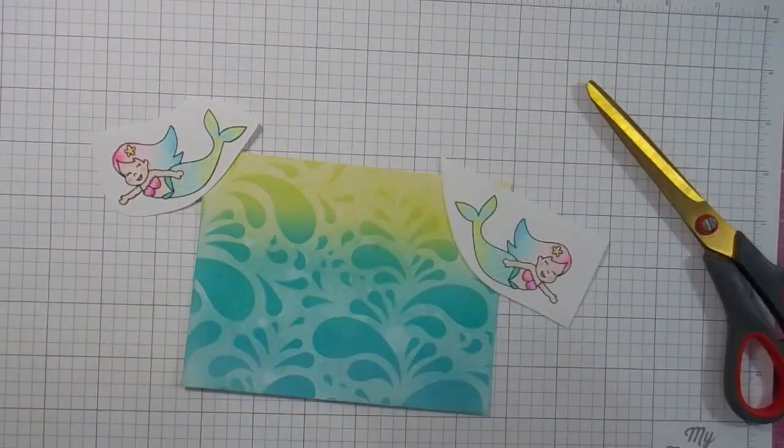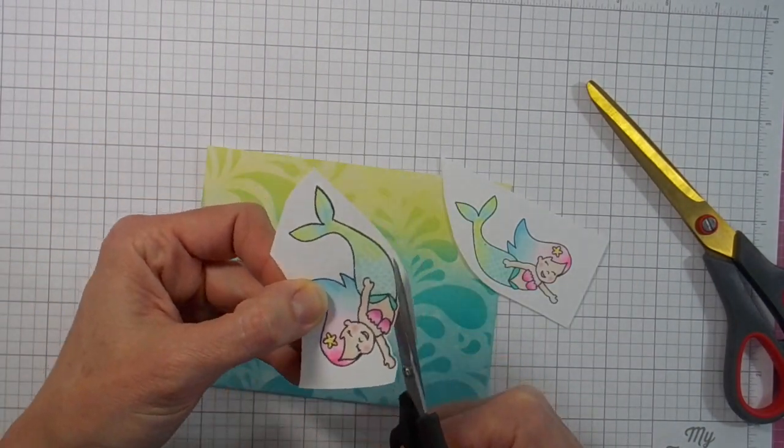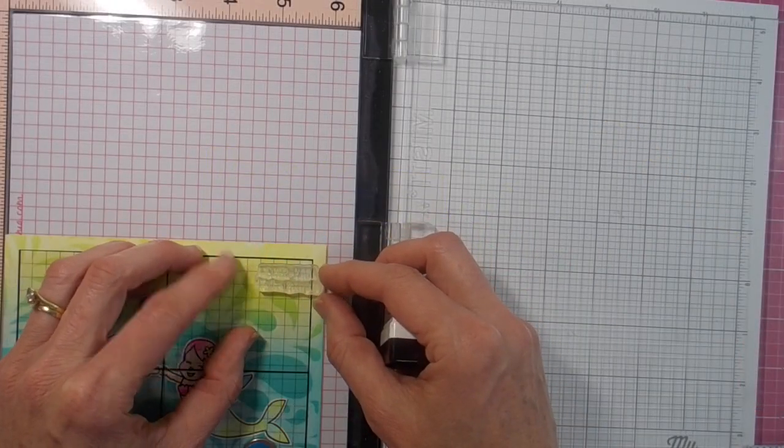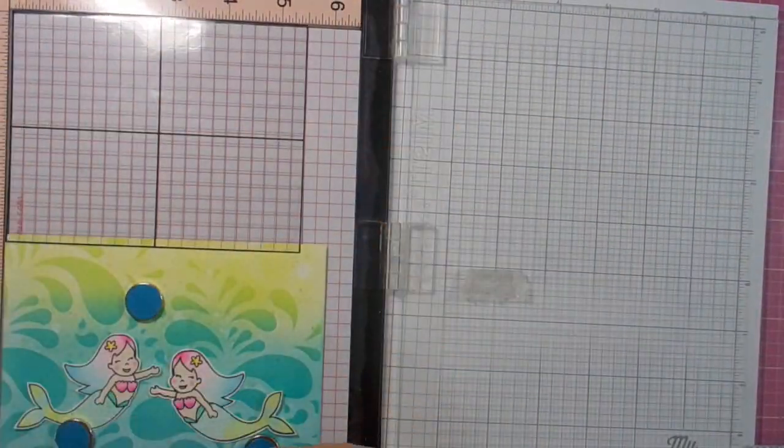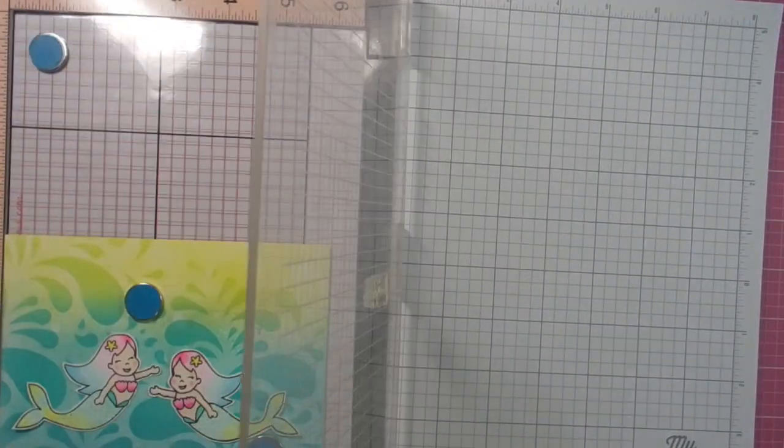Time now to fussy cut my two little mermaid friends, and I won't show you the whole process, just a little pair of scissors moving the paper as I go. Once they're cut out, I'm going to stamp my sentiment from the Mermaid stamp set in VersaFine Onyx Black right up in the top right of the card front there.